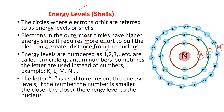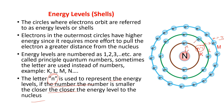The letter n is used to represent energy levels. If the number is smaller, the energy level is closer to the nucleus. For n=1, the electrons are much closer to the nucleus. For n=2, the electrons are a little farther away compared to n=1. For n=3, the electrons are at an even greater distance compared to both n=1 and n=2. This is about energy levels or energy shells.